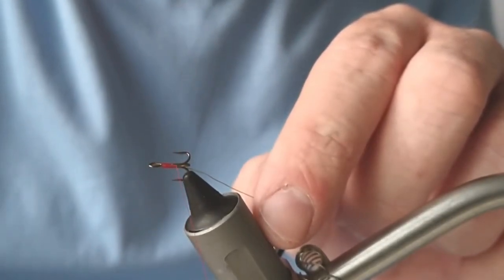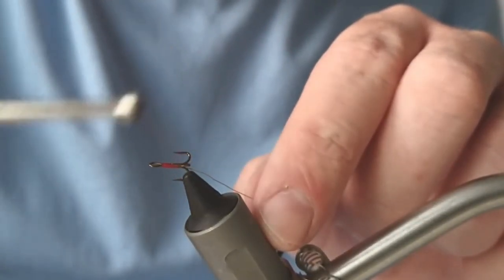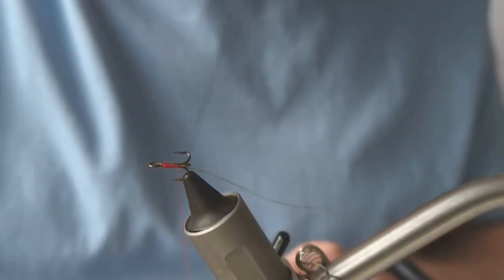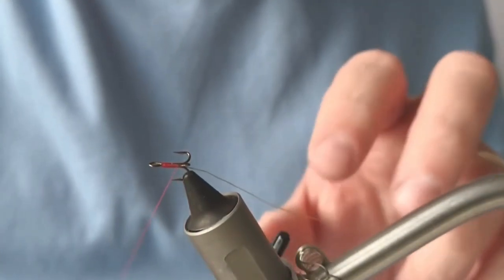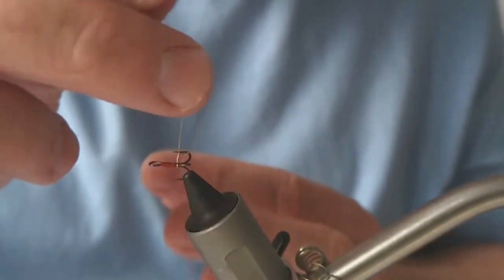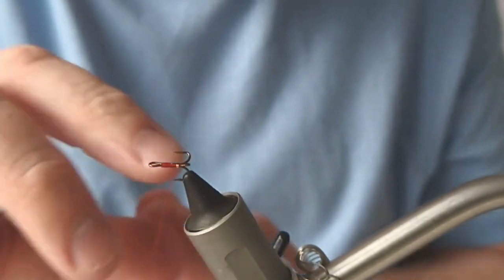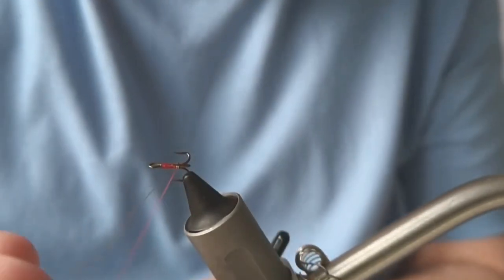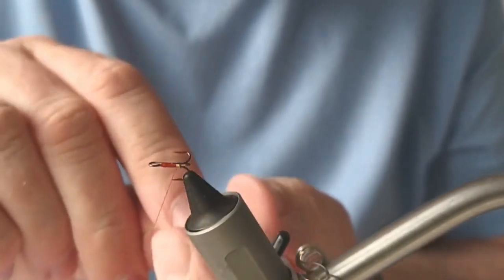Once you're down a bit there, just roughly to the barb, you can start using your wire. I'm making a tag out of it. It's up to yourself for many turns. I'm going to do three or four.